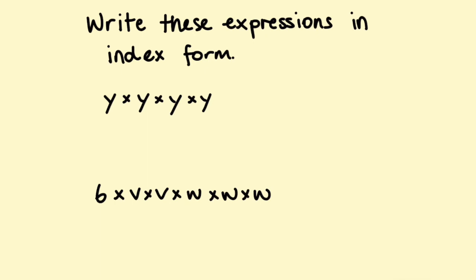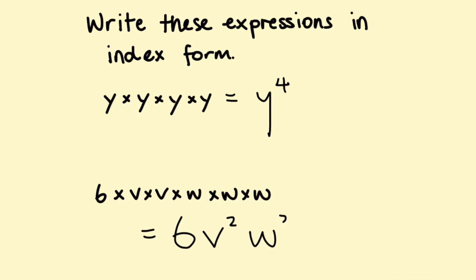Let's have a look at some quick examples. You might get a question like: write these expressions in index form. For y times y times y times y, that's going to be y to the power of 4. You might also get something like 6 times v times v times w times w times w. Start off with your number — when writing an expression, numbers always come before letters. I've got v twice so that's v to the power of 2, and w appears 3 times so that's w cubed. So the answer is 6v squared w cubed.